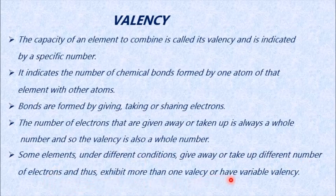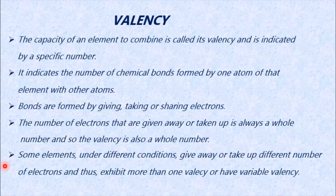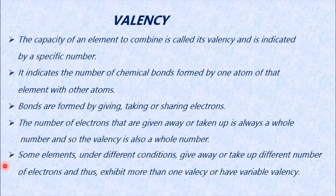Some elements under different conditions give away or take up different numbers of electrons, so they have more than one valency — called variable valency. For example, carbon exists as carbon-12, carbon-14, carbon-16, and so on. When these carbons take electrons, the valency differs because of the different numbers of electrons present. So for the same element, carbon, the valency can differ — these are called variable valencies.